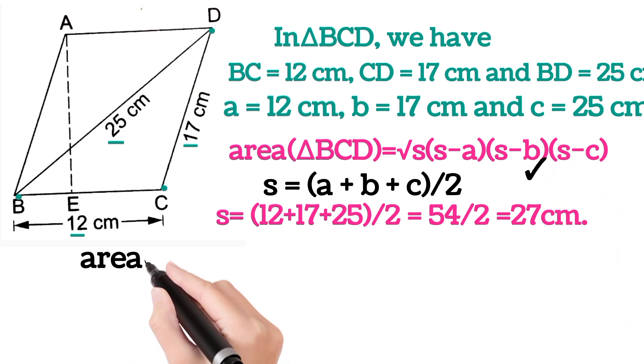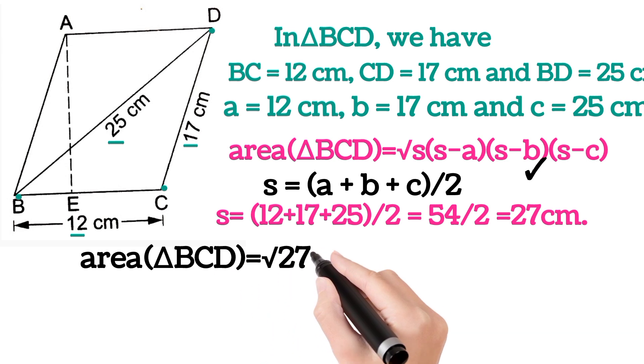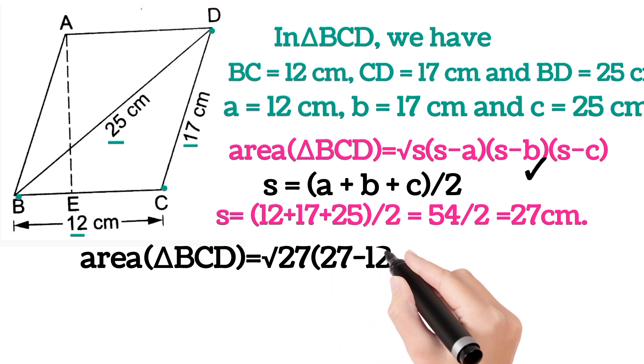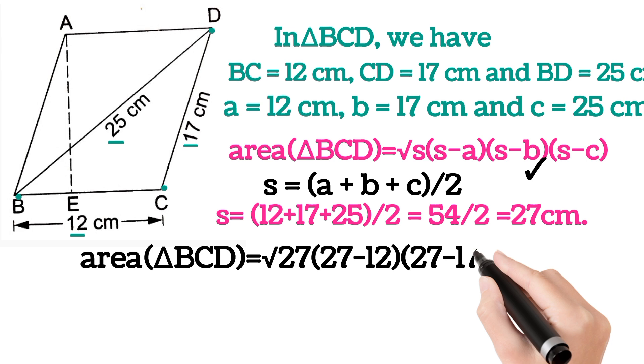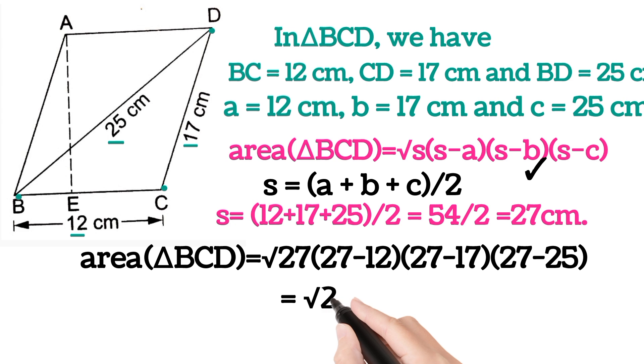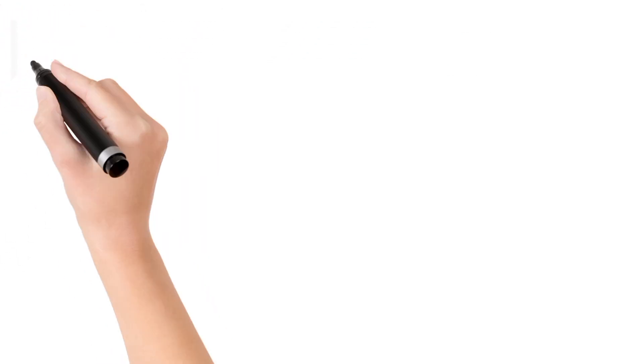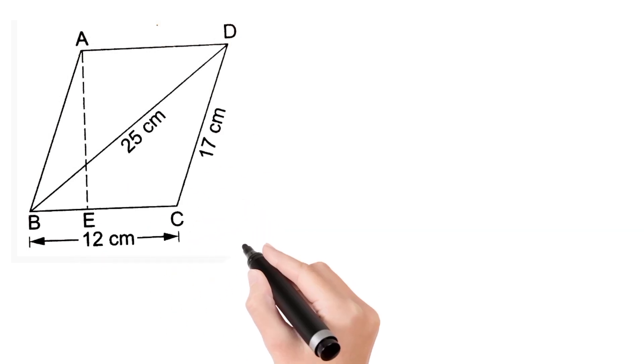...we will get area of triangle BCD is equal to square root of 27(27 minus 12)(27 minus 17)(27 minus 25). This will give square root of 27 into 15 into 10 into 2. On solving, we will get 90 centimeters squared.